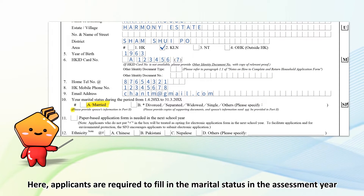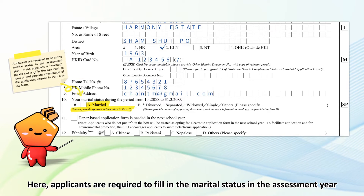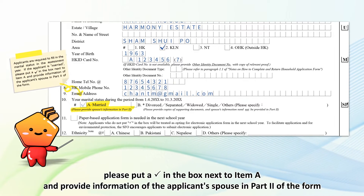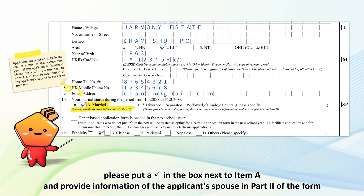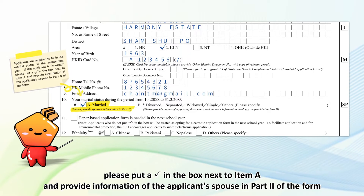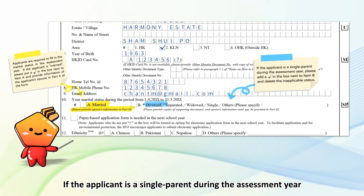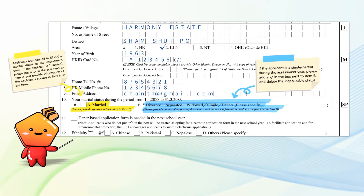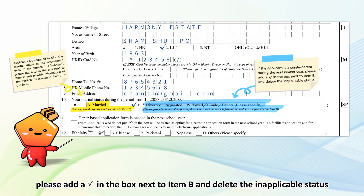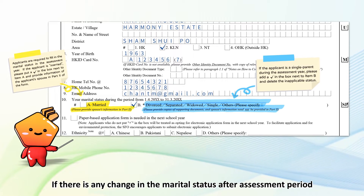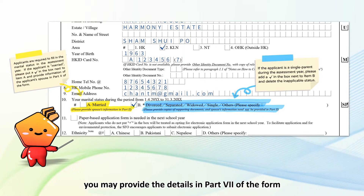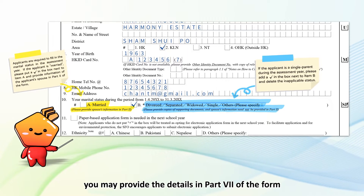Applicants are required to fill in the marital status in the assessment year. If the applicant is married, please put a tick in the box next to item A and provide information of the applicant's spouse in Part 2 of the form. If the applicant is a single parent during the assessment year, please add a tick in the box next to item B and delete the inapplicable status. If there is any change in the marital status after the assessment period, you may provide the details in Part 7 of the form.